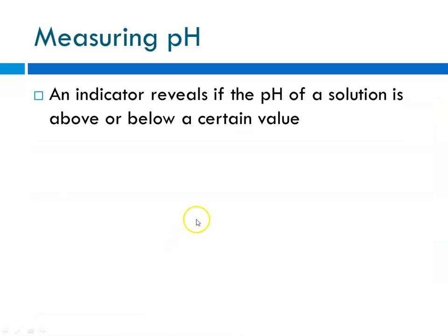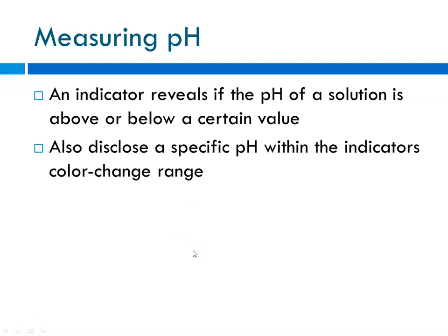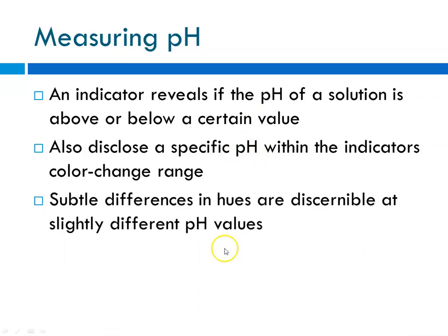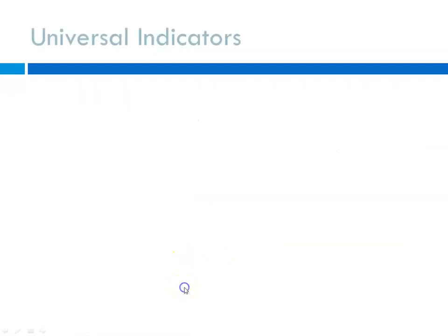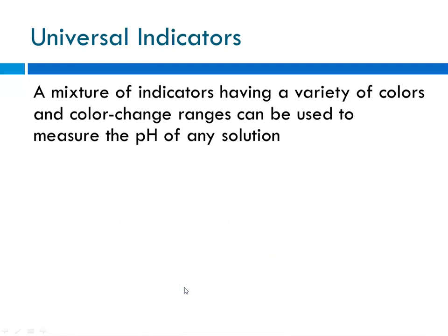An indicator reveals if the pH of a solution is above or below some certain value. It will also disclose a specific pH in that color change range, and there are subtle differences in the hues that are discernible with slightly different pH values. That's why we often use a universal indicator, which is a mixture of indicators with a variety of colors and color change ranges.